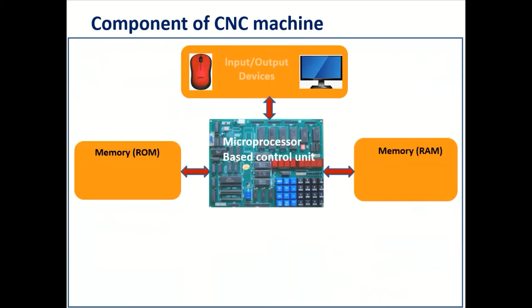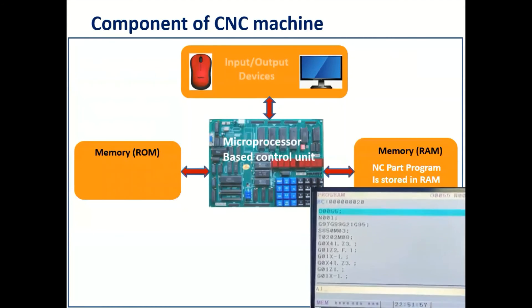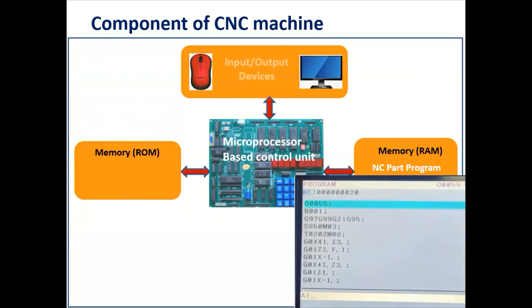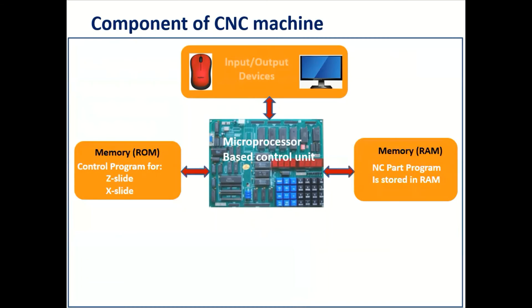In RAM, the NC part programs are stored. The current program in the RAM can be erased and replaced by a new program as jobs are changed. According to whatever jobs you have to perform, you can write new programs there, giving a set of instructions using M codes and G codes. In ROM, the control program for the machine tool is stored — basically used when giving movements in the X slide, Y slide, or Z, and we use read only memory for that.